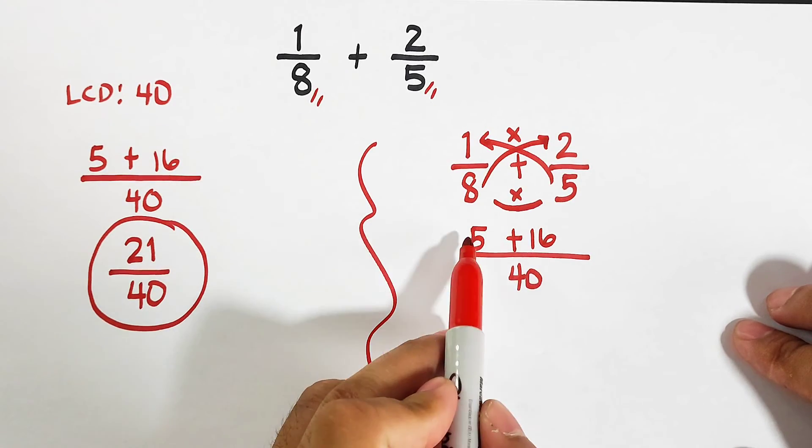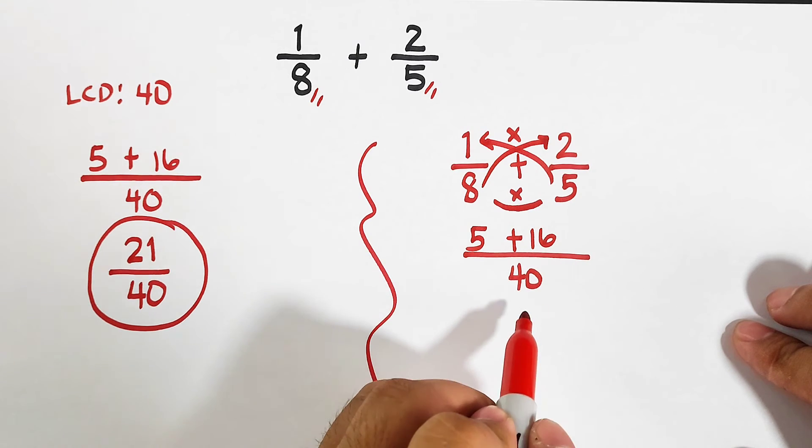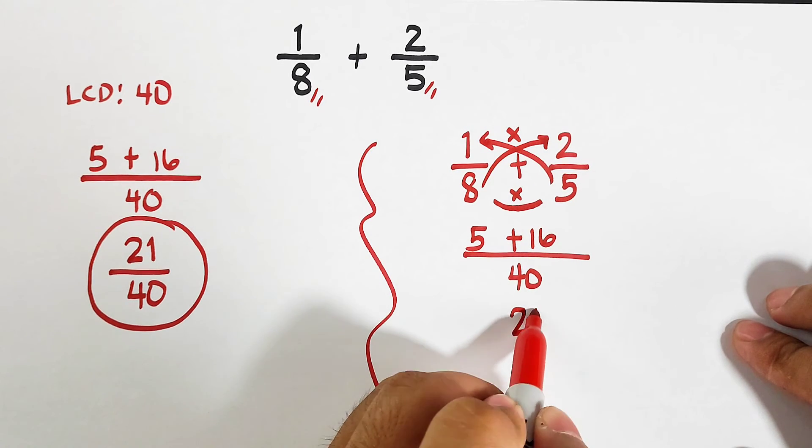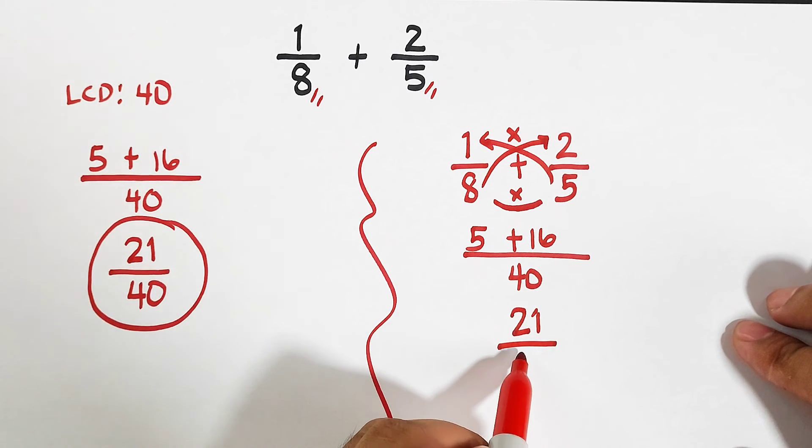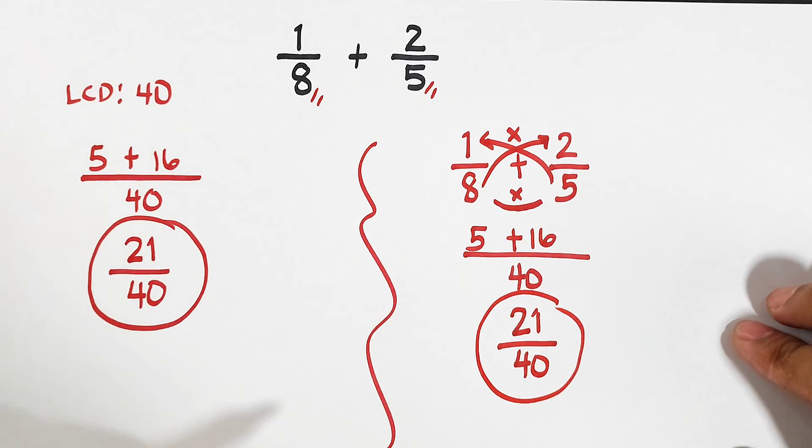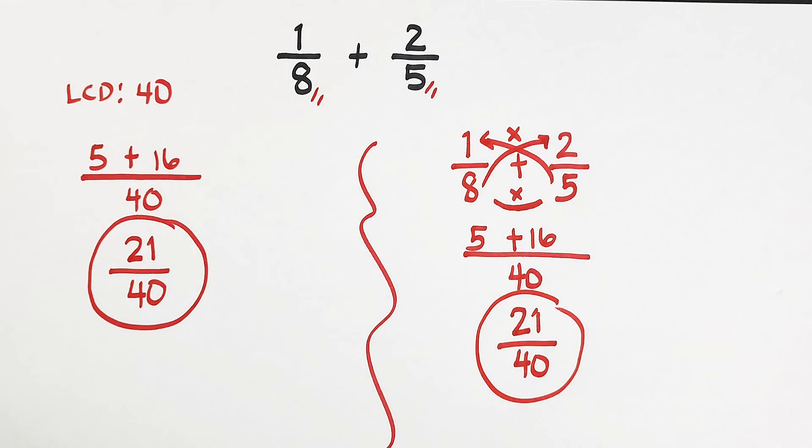So what we have now is 5 plus 16. That would give you the answer of 21. Copy your denominator 40. And still, we could get 21 over 40.